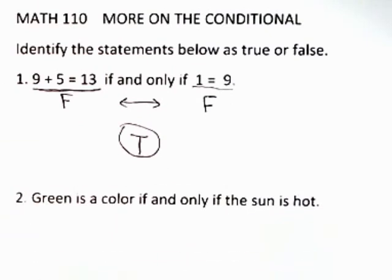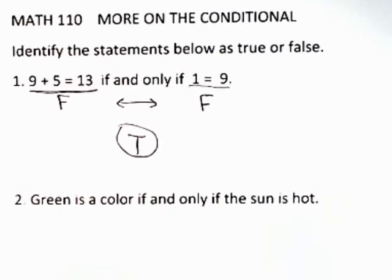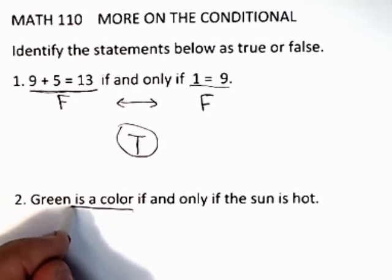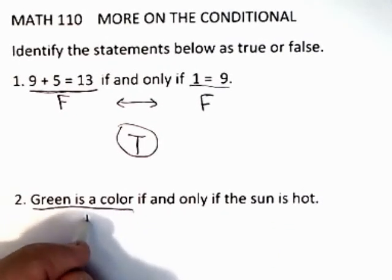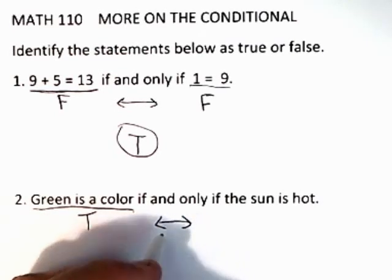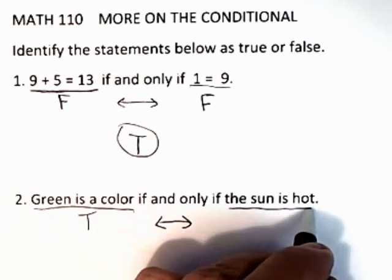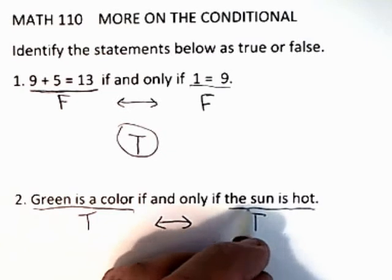The second question said, green is a color if and only if the sun is hot. Well again, green is a color is certainly a true statement. If and only if is the biconditional. The sun is most definitely hot, so that's true.